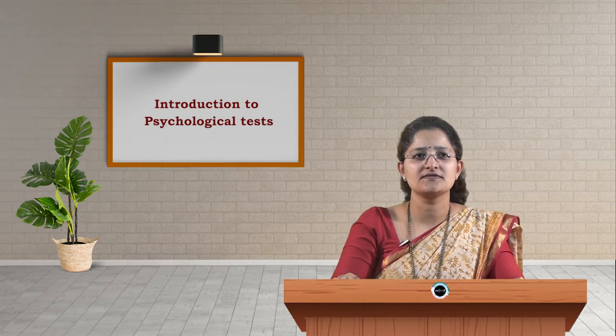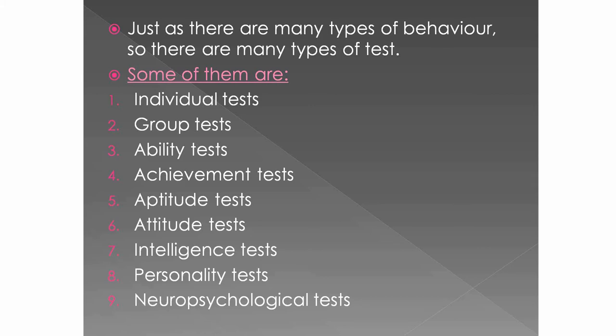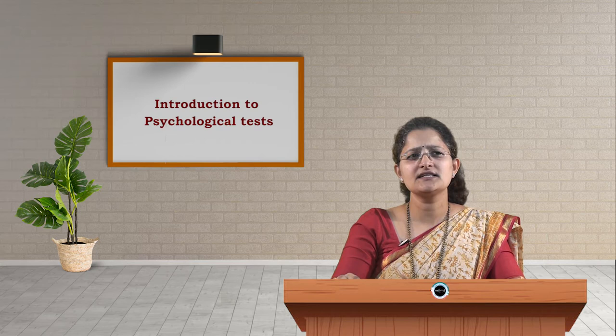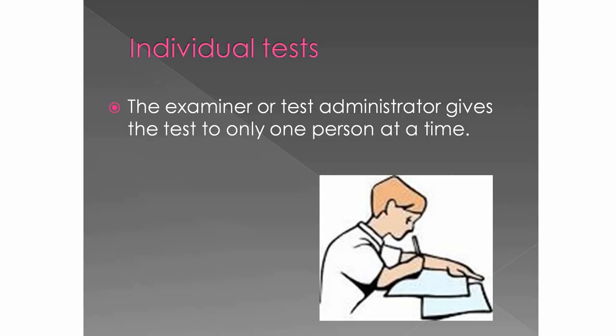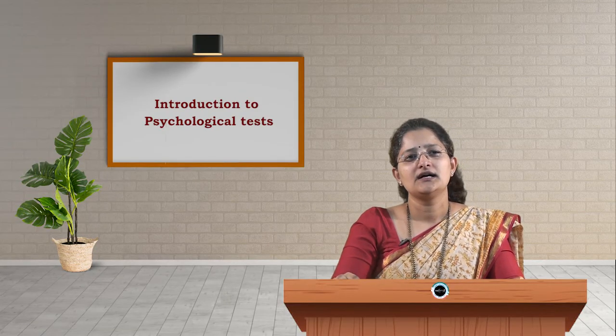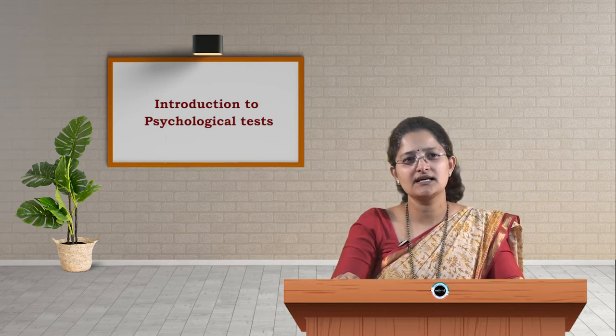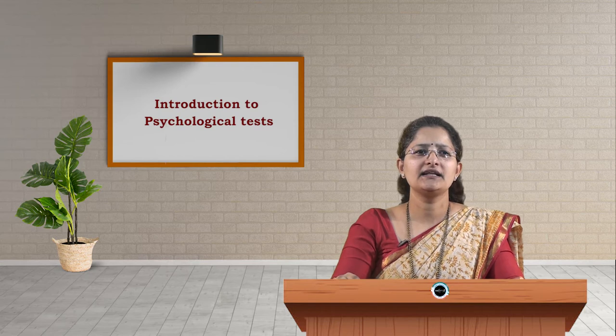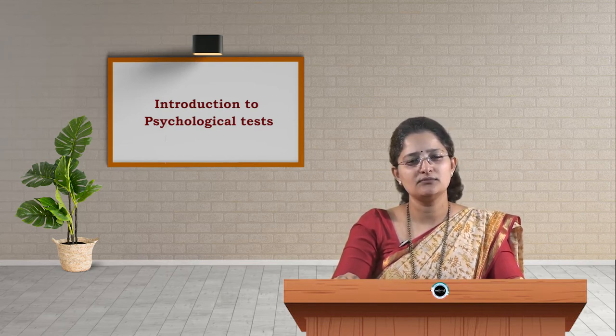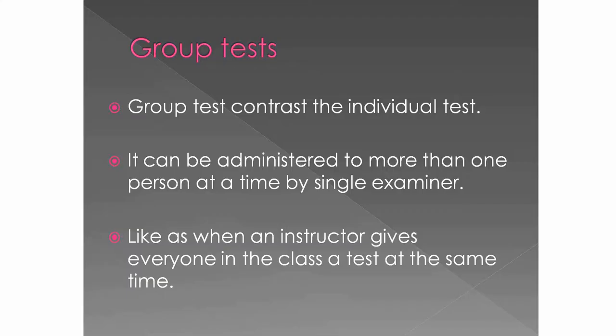Just as there are many types of behavior, so there are many types of tests. The first type is individual tests, where the examiner gives the test to only one person at a time. An example is the Seguin Formboard Test, which is an individual intelligence test. In contrast, a group test can be administered to more than one person at a time by a single examiner — for example, when an instructor gives everyone in the class a test at the same time.